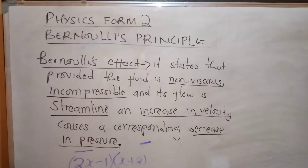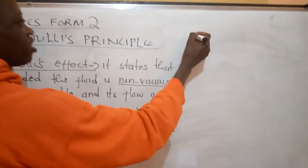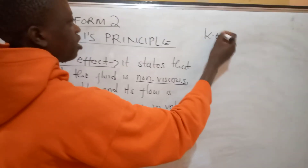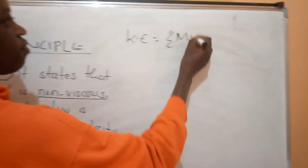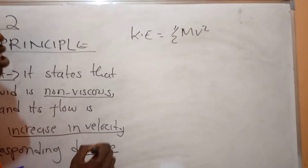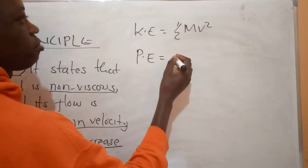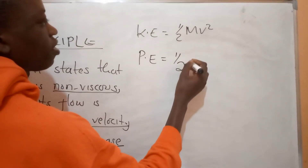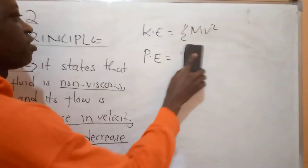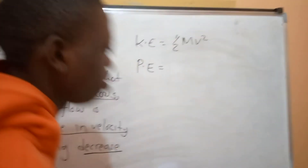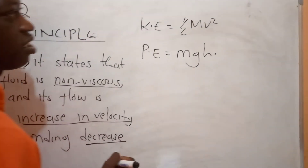Taking you back to Bernoulli's Principle — number one, I want us to look at kinetic energy, KE. Kinetic energy is calculated by the value of one-half mv squared. We also have potential energy, which is the energy possessed by the particle at rest, calculated by mgh.